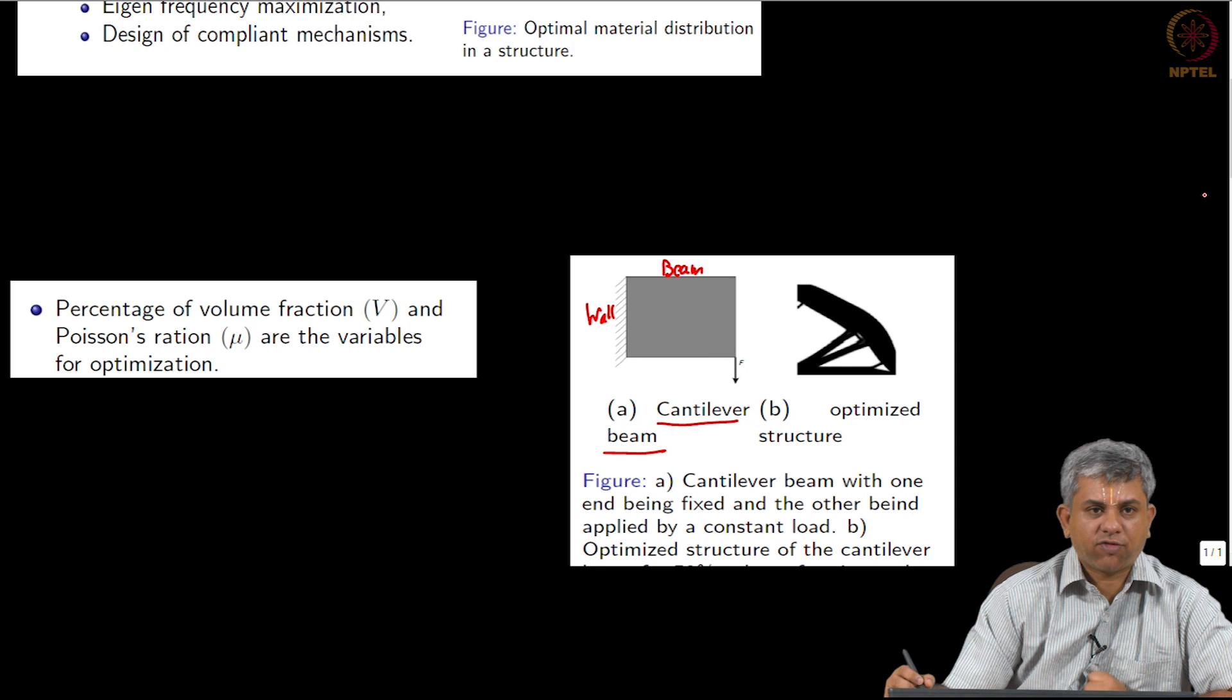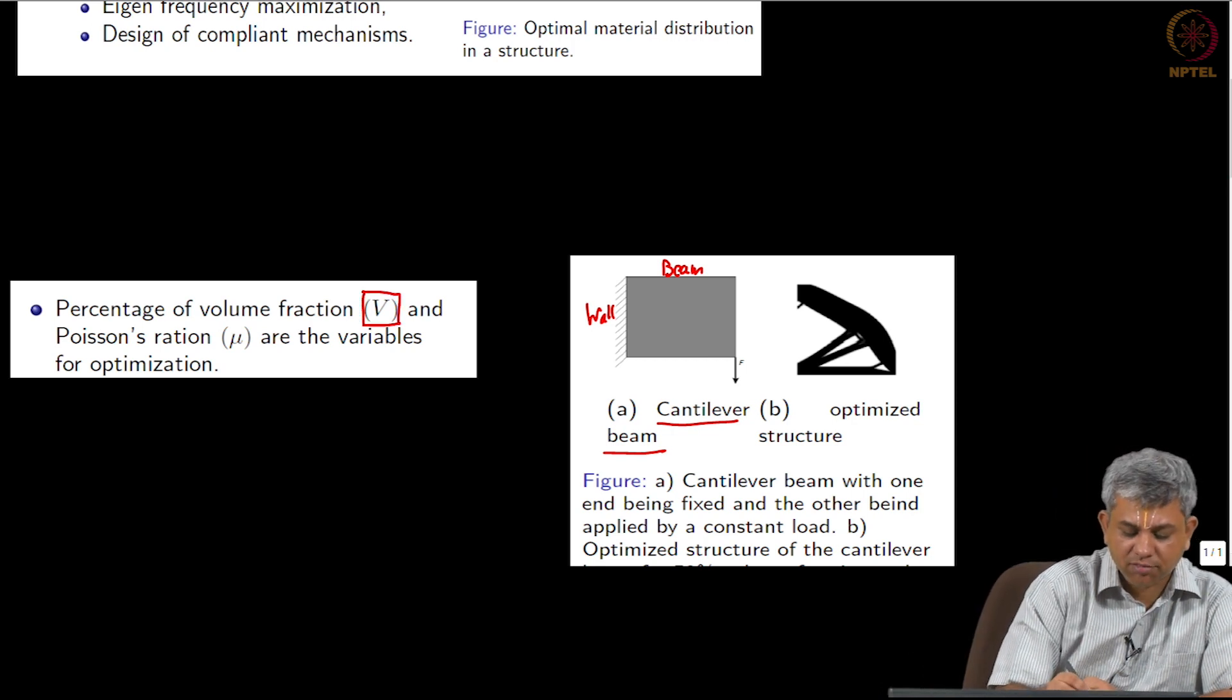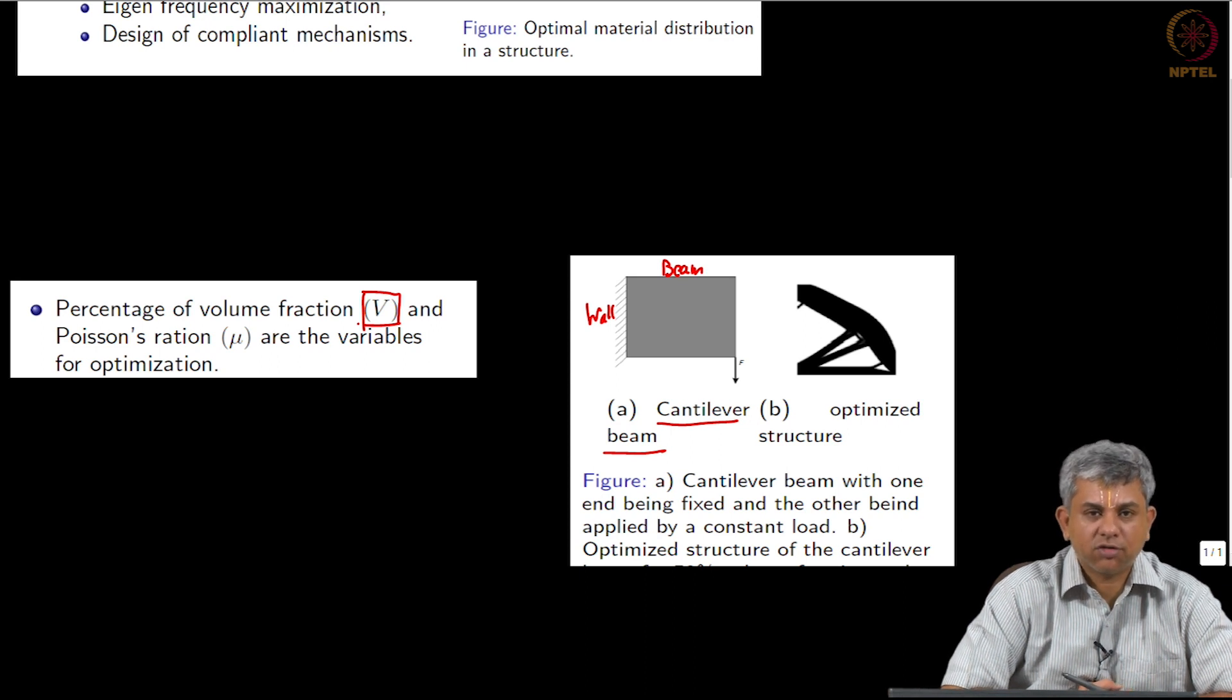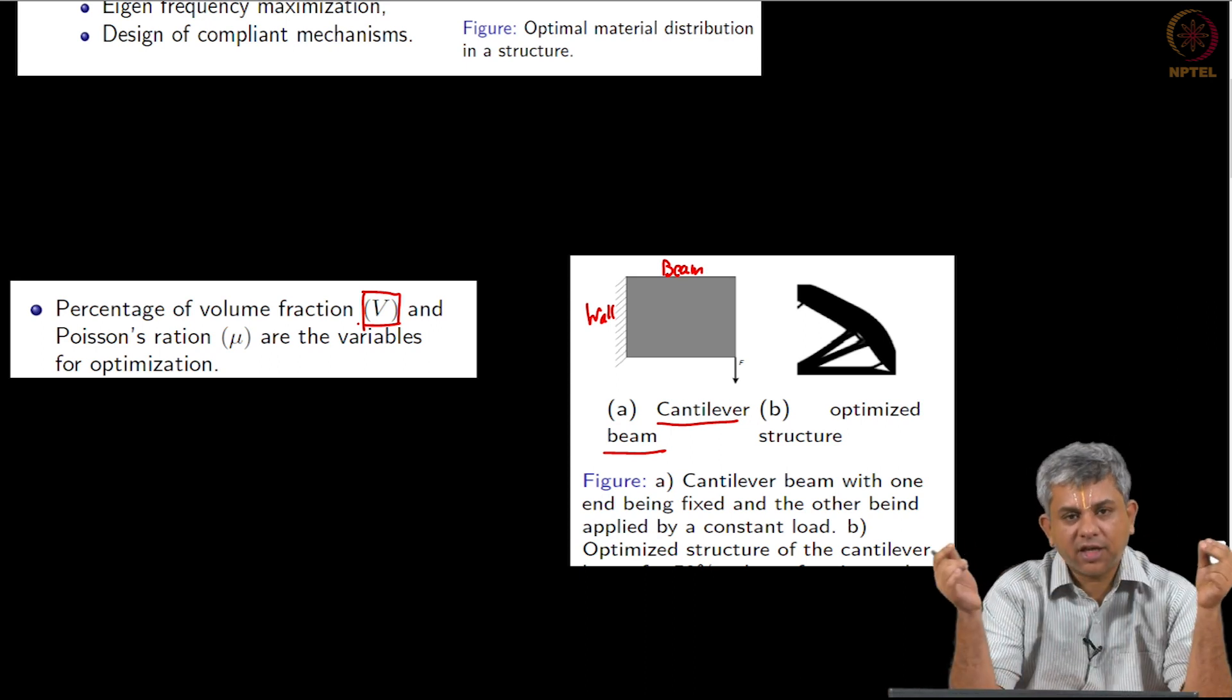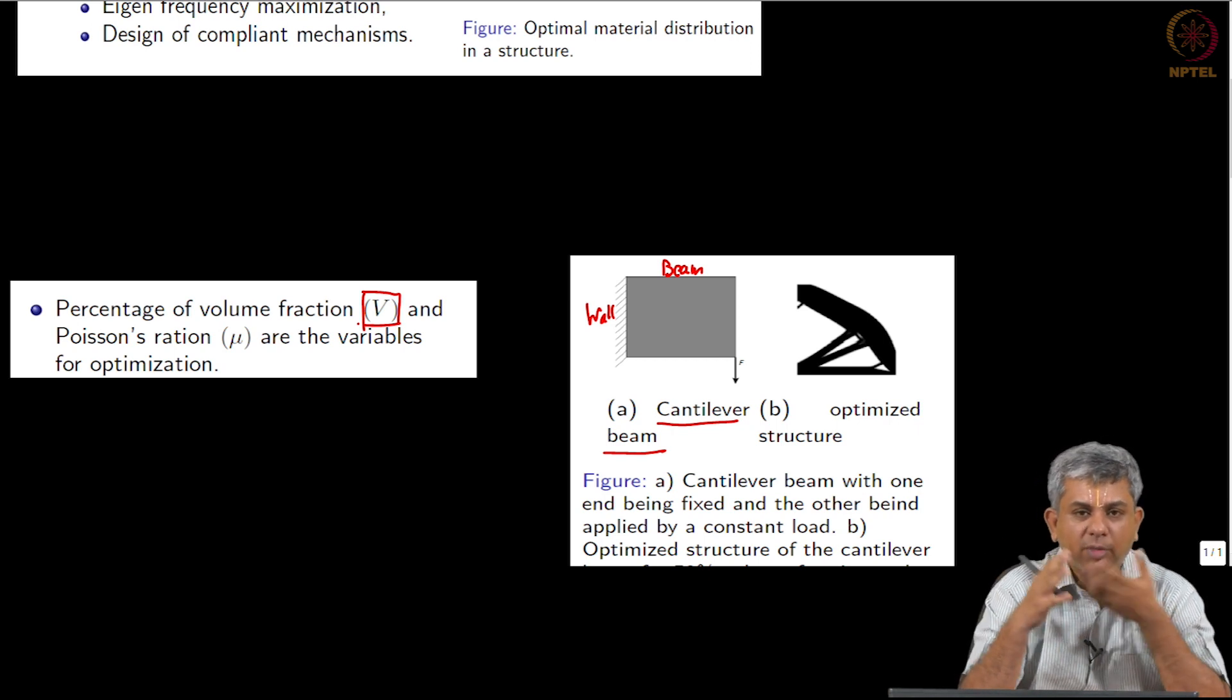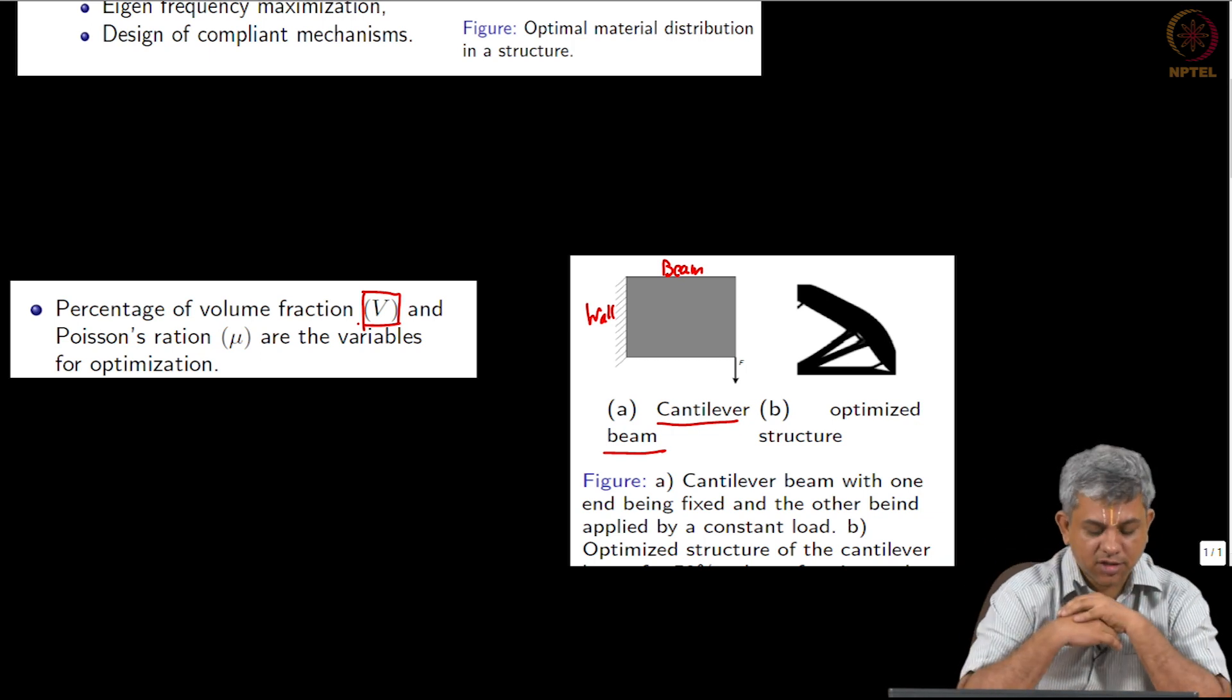Now our constraints are as follows: I am going to give you what volume fraction, what percentage of volume fraction you can use. So if I give you 10 kg of material and I will say that 70 percent is what you can use, you will have to make do—throw away 3 kg of material in some way so that it still does not break.